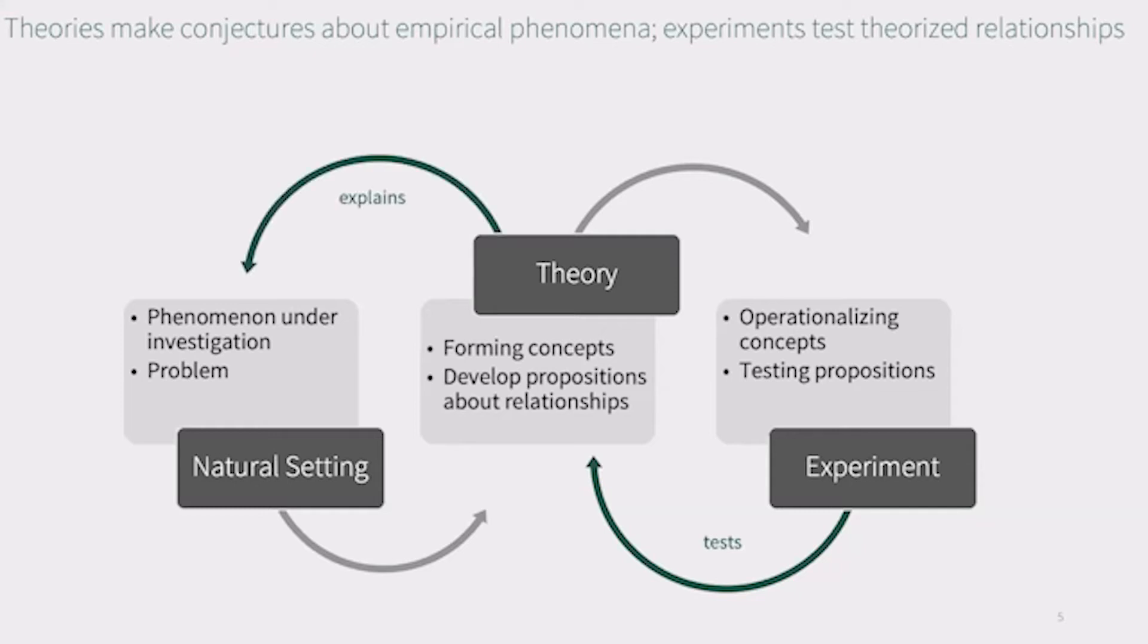We may also say that experiments are part of a confirmatory type of research as opposed to exploratory research that is geared towards finding explanations and building theory. Of course, since experiments are artificial, they cannot mirror a natural setting in which a phenomenon occurs and the transferability of their findings to the real world is limited.